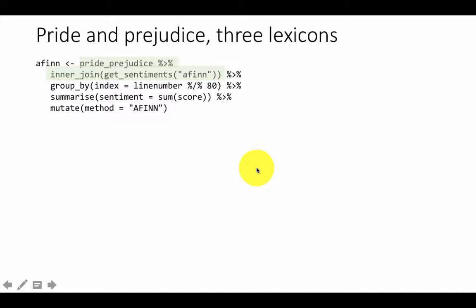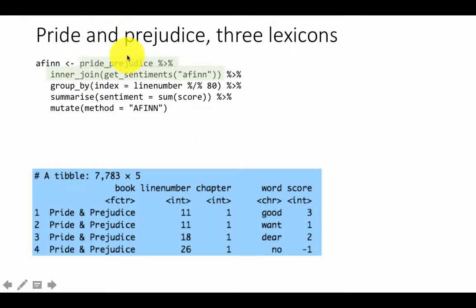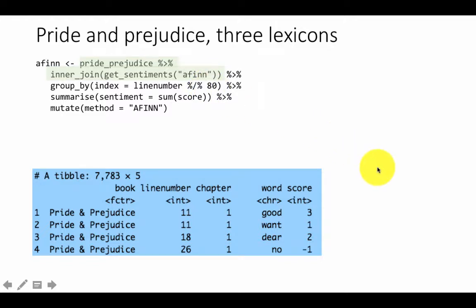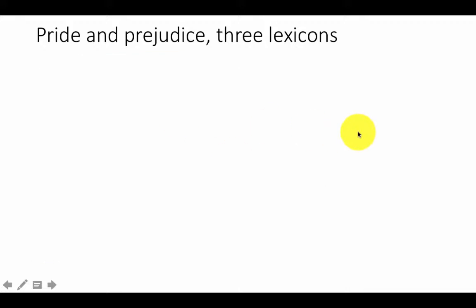We also want to add a column to indicate that the method is AFINN, because for the book we're going to have three different sentiment analyses and we want to identify which lexicon performed each analysis. So here step by step: we took Pride and Prejudice, joined it with the sentiments, and we get the word along with its sentiment score — that's how AFINN works.